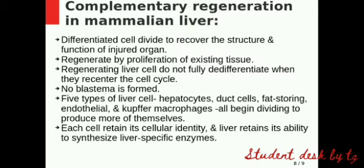The fourth type is Compensatory Regeneration in the mammalian liver. If our organs are injured, differentiated cells will divide to recover the structure and function. We proliferate the existing tissue to regenerate the liver cells. The liver cells are not fully de-differentiated — they re-enter the cell cycle. No blastema is formed in this process.